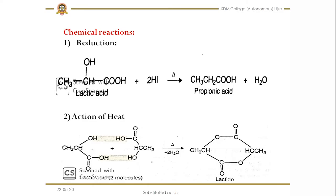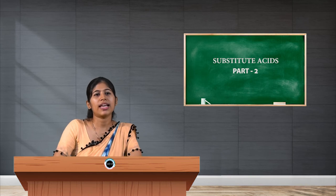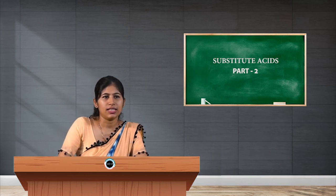Second reaction is the action of heat. When you heat lactic acid at higher temperature, two molecules of lactic acid simultaneously undergo removal of water molecules, and cyclization takes place. One hydrogen from one molecule and one hydroxy group from the other molecule are removed — in this way two water molecules are removed. As a result we get the cyclic product called lactide.